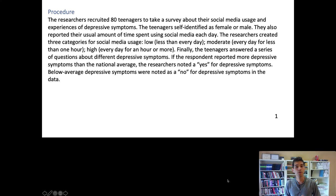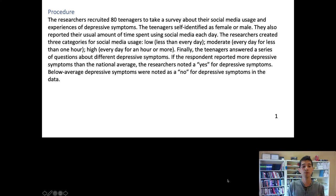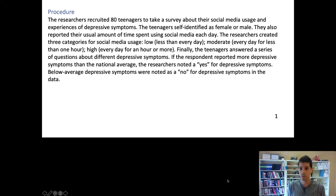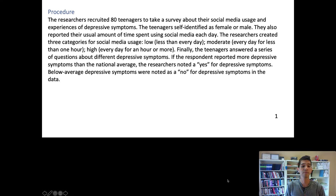In the survey, the teenagers also reported the usual amount of time they spent using social media each day. The researchers created three categories: low social media usage was less than every day; moderate was going online every day but for less than an hour; and high usage was going online every day and spending an hour or longer across all the different social media platforms.